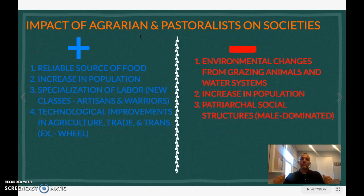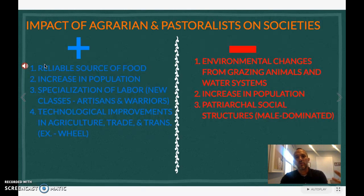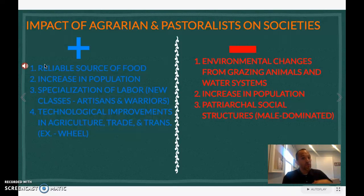The Neolithic Revolution wasn't one hundred percent amazing — there are both positives and negatives. On the positive side: you have a reliable source of food, an increase in population, and specialization of labor — not everyone has to be a hunter and gatherer. People can now be scribes, engineers, or builders. You also get technological improvements in agriculture, trade, and transportation — the wheel, for example, wouldn't have been invented unless someone had time to figure out how to make one.